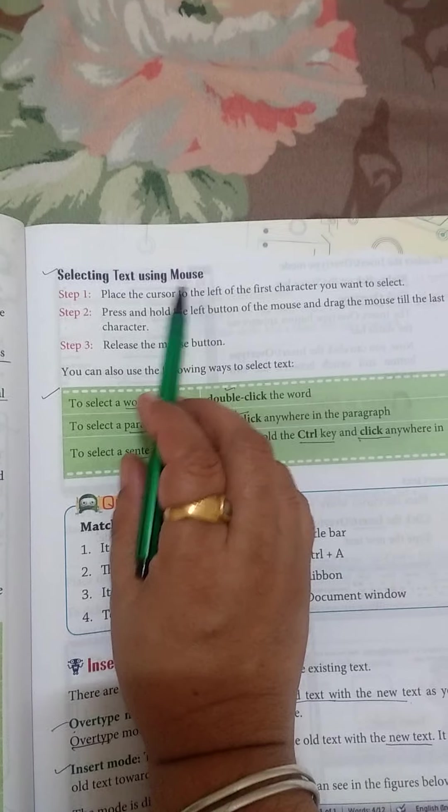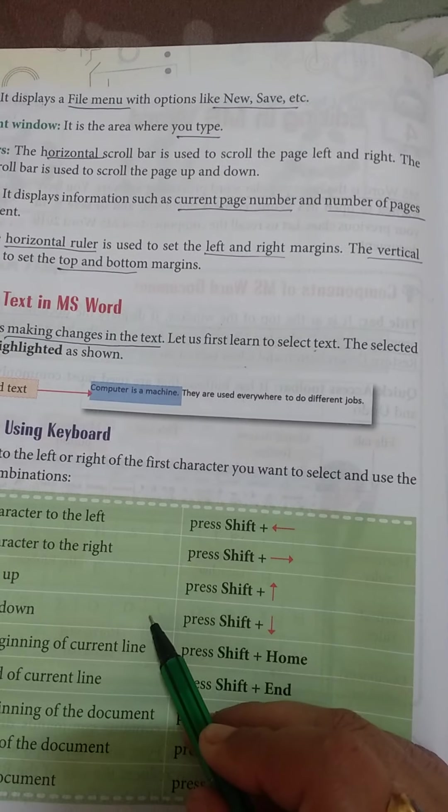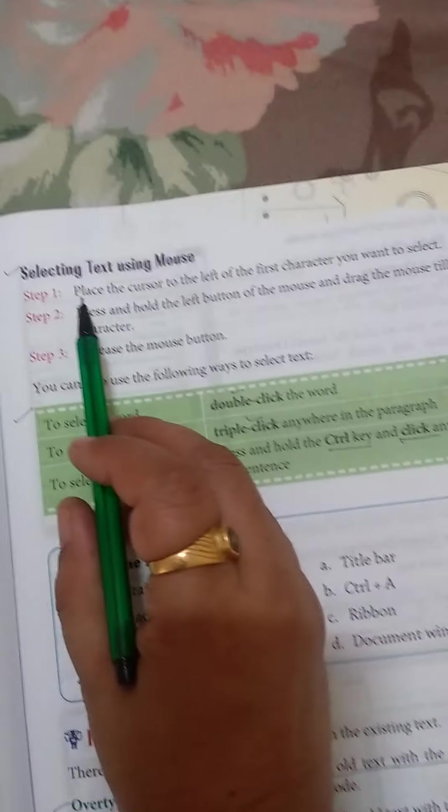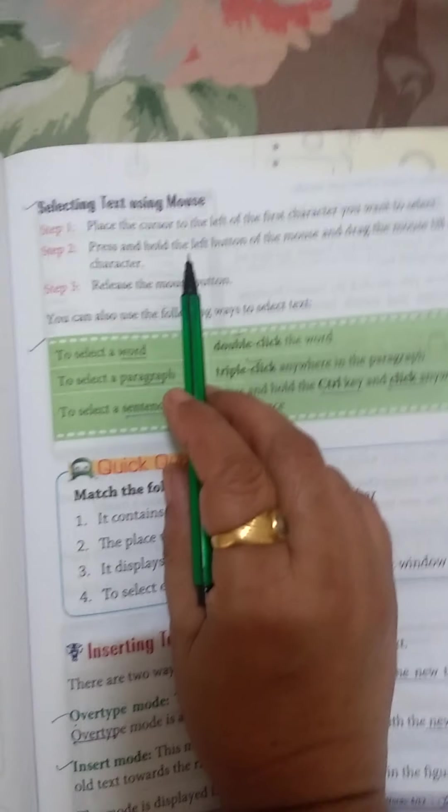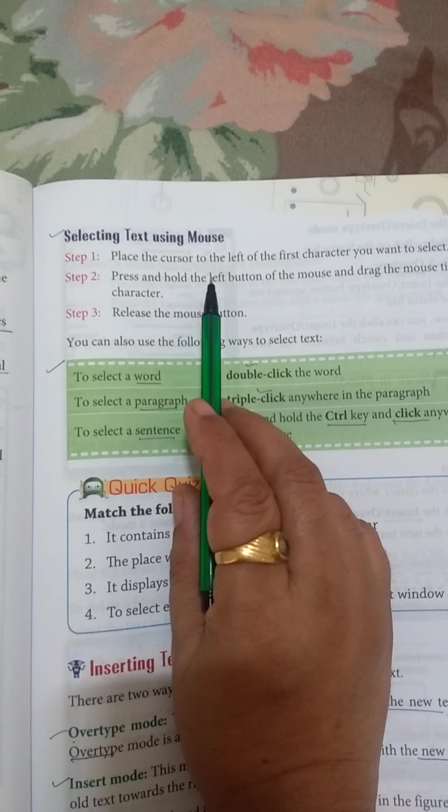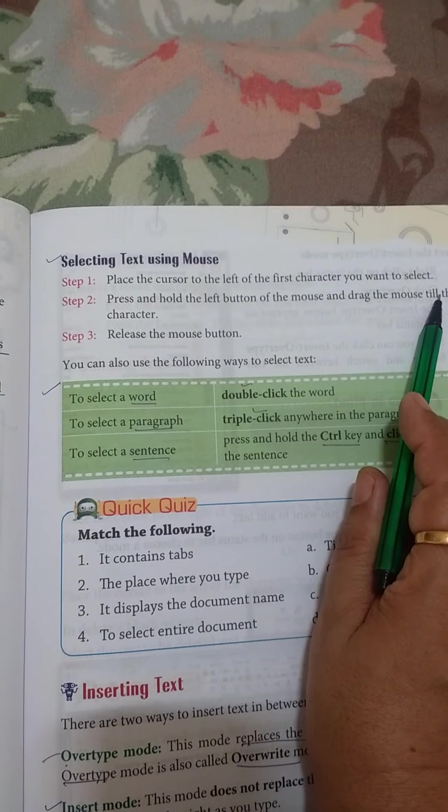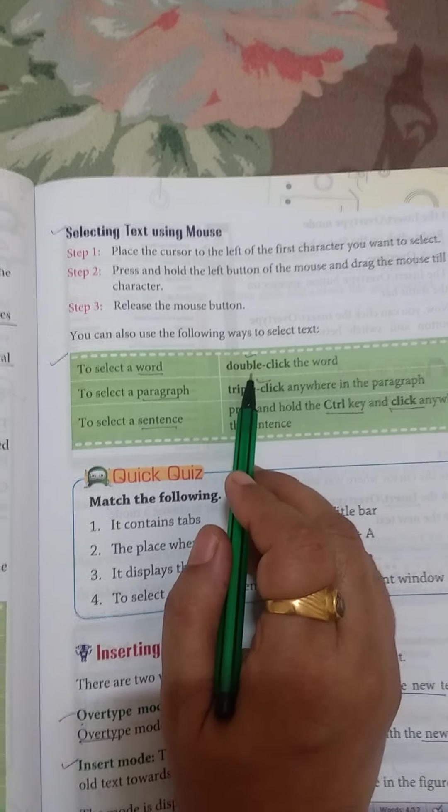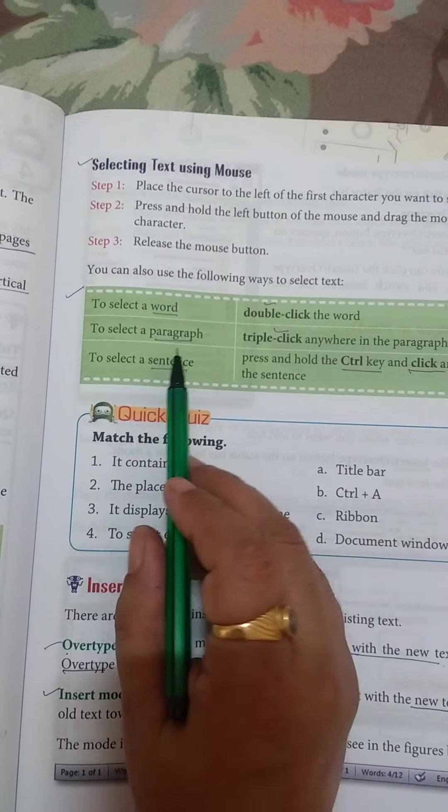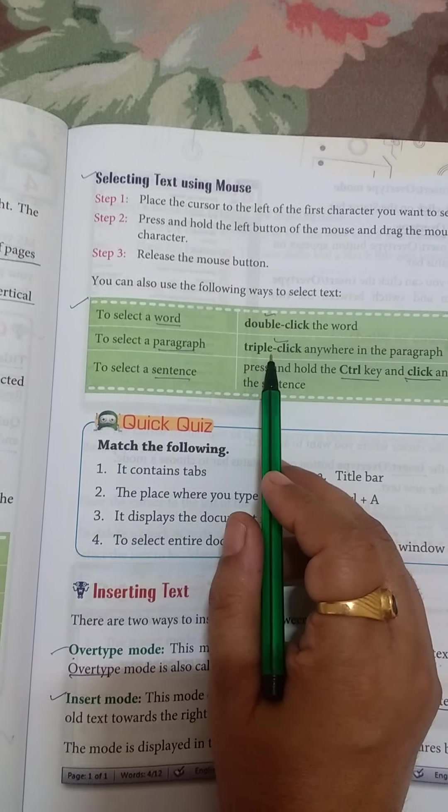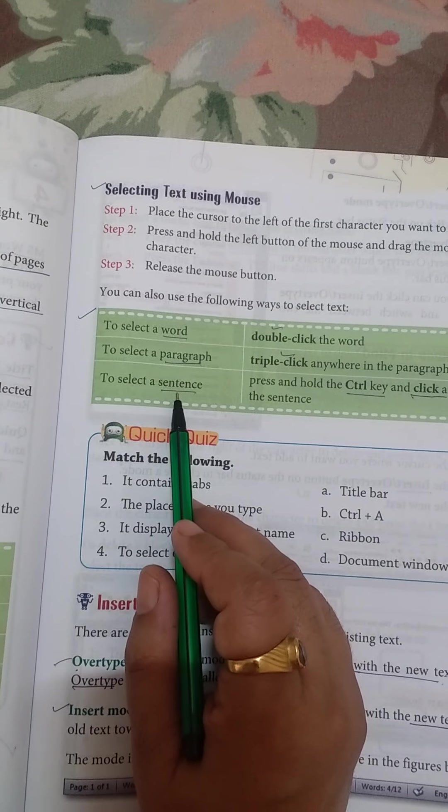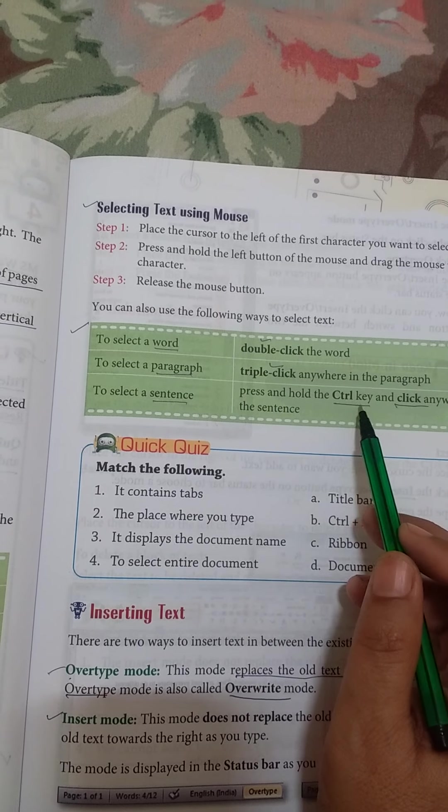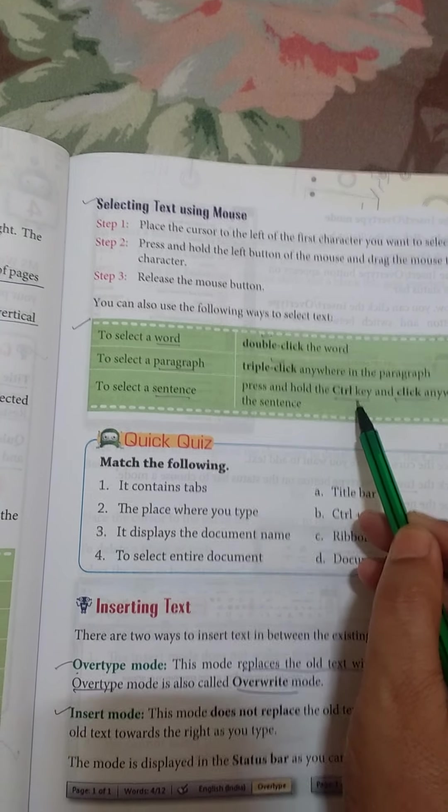Selecting text using mouse. We learned how to select text with the help of keyboard. Now with the help of mouse, you have to press and drag from left until where you want to select. To select a word, double click. For selecting a paragraph, triple click. For a sentence, click anywhere in the sentence with the help of control key.